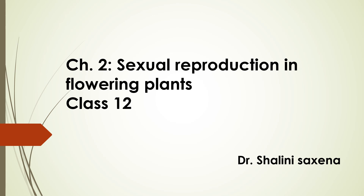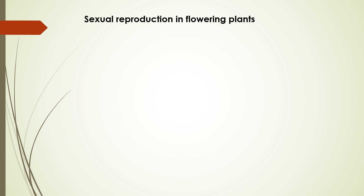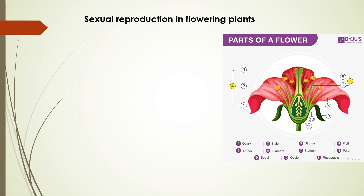Hello children, today we are starting a new chapter: Sexual Reproduction in Flowering Plants. As you know from the previous chapter, this physiological process completes in three events — the same applies here. We are talking about flowering plants, so the same events that happen with any organism during sexual reproduction will be discussed. Flowering plants means we are talking about angiosperms, and the main part that participates in reproduction is the flower.